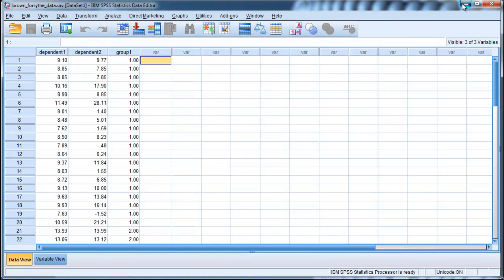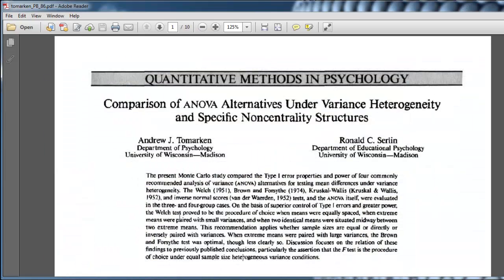Now that's how you do the robust ANOVAs in SPSS. And I thought I'd draw your attention to this simulation study, because this is how we know that these tests work and that they protect us. And what Tamarkin and Serlin did in 1986, at least it was published in 1986,